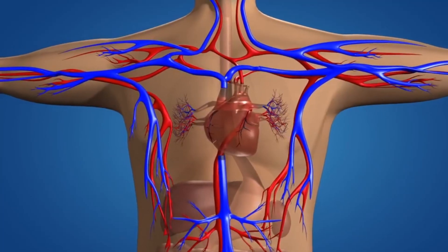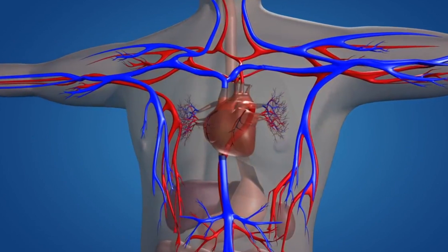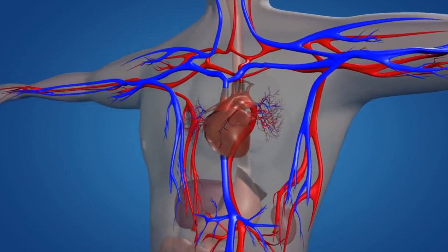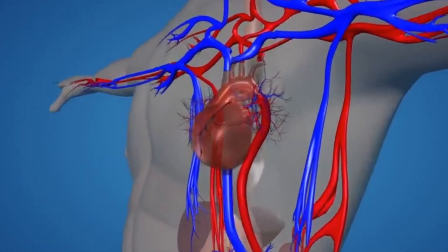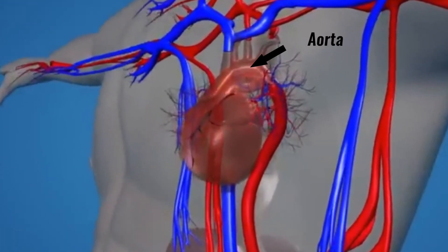Blood vessels carry blood around the body. Oxygenated blood exits the heart from the aorta and passes into the artery.